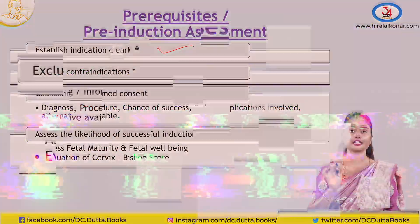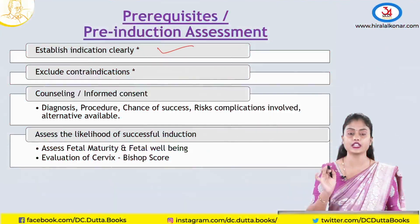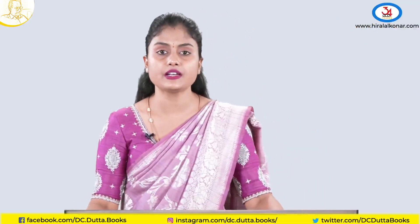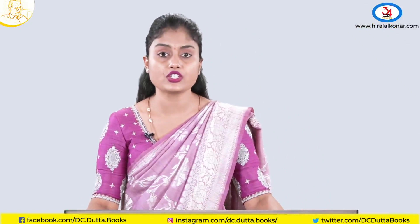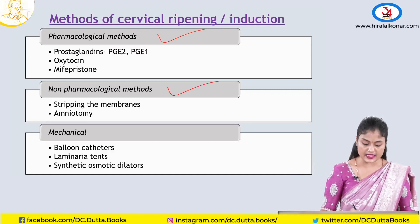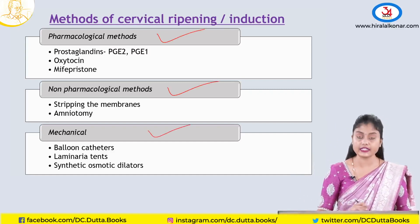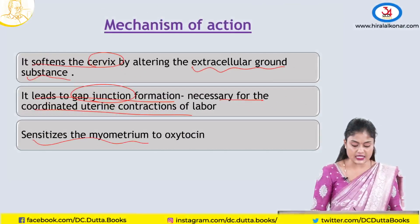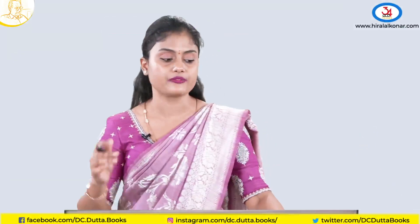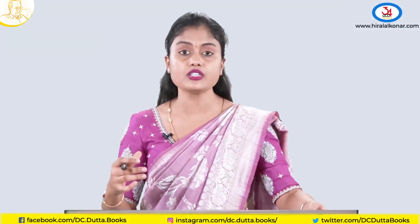As already mentioned, you should always have a clear indication for induction of labor. The methods for ripening the cervix or induction of labor include pharmacological methods, non-pharmacological methods, and mechanical methods. Pharmacological agents sensitize the myometrium for oxytocin, which we also administer and the body also produces.